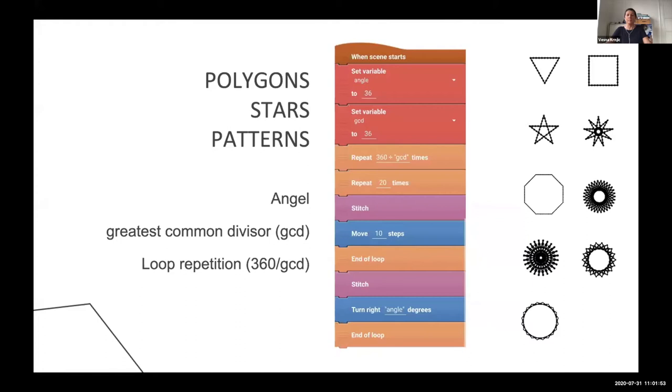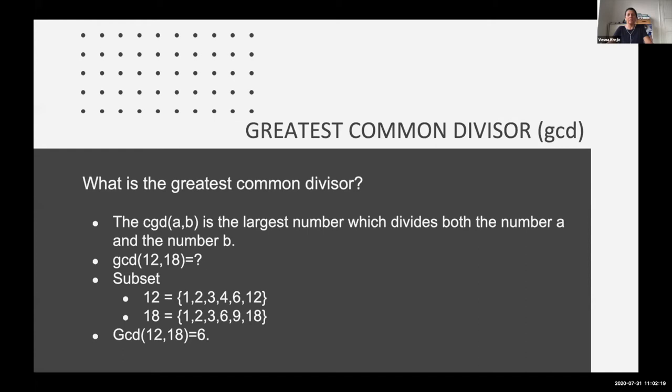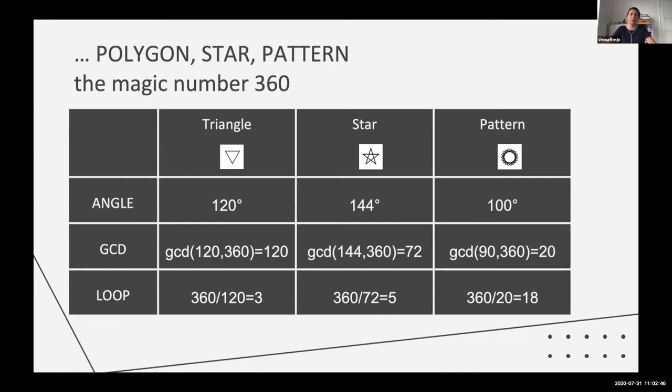The next step was to talk about polygons. So okay, now I'm able to program a square, so how can I program a triangle? So the next step was to talk about greatest common divisor. So they learned in a very playful way what is the greatest common divisor. In my talk I will not talk about the greatest common divisor because it's not funny, but the students learned about all the math stuff in a very, very playful way. So at the end they were able to program a triangle, to program a star, and to program a pattern they want.